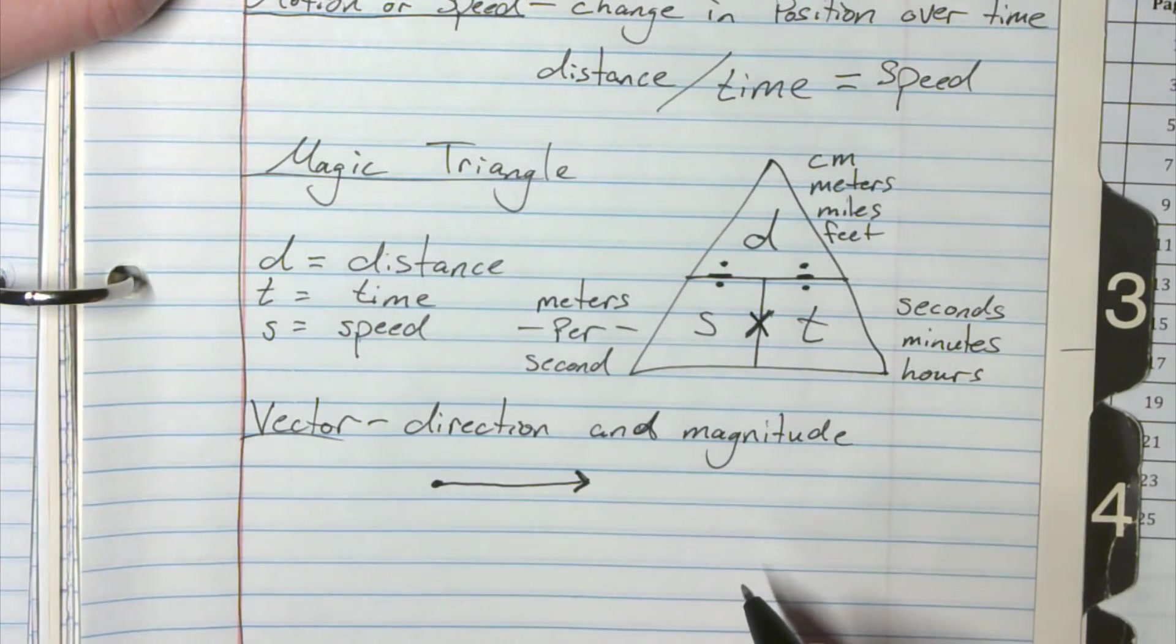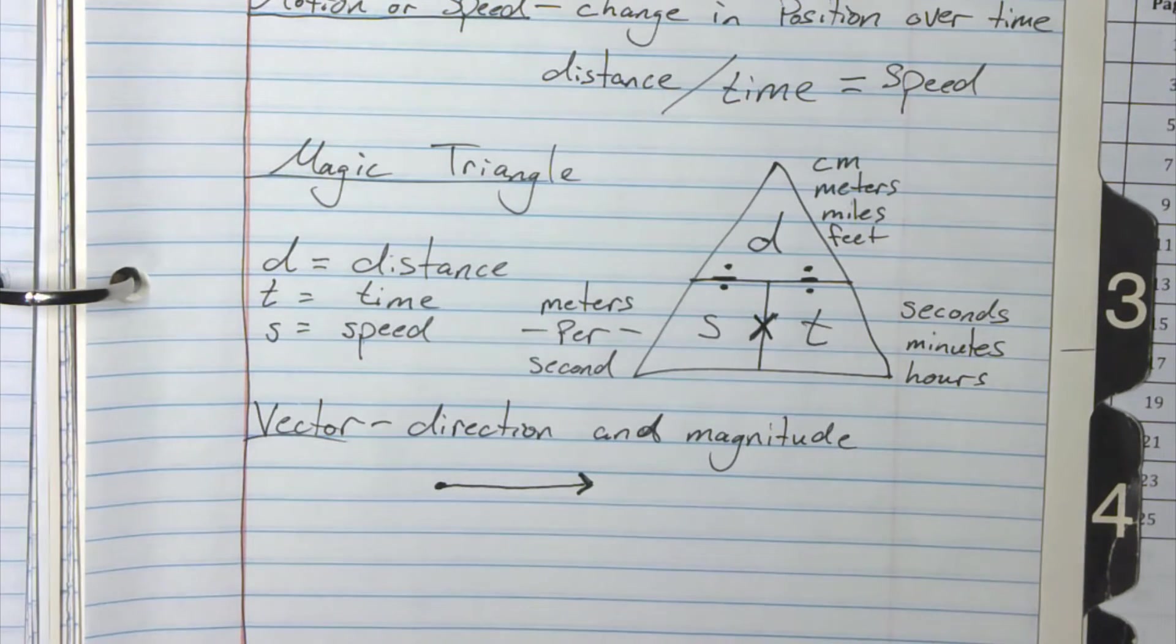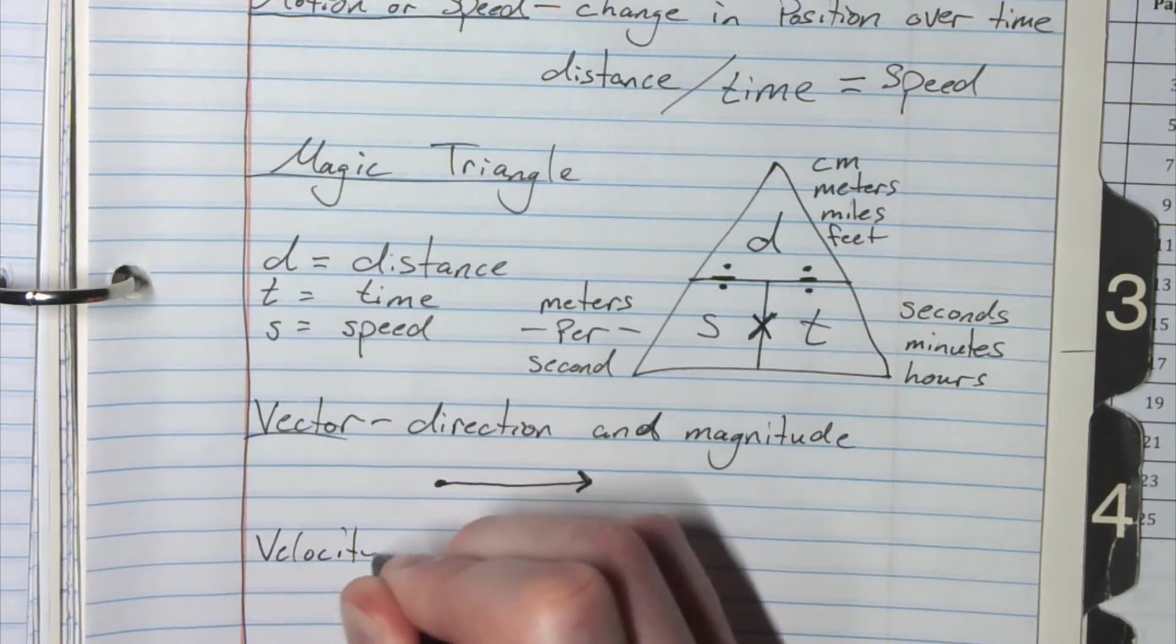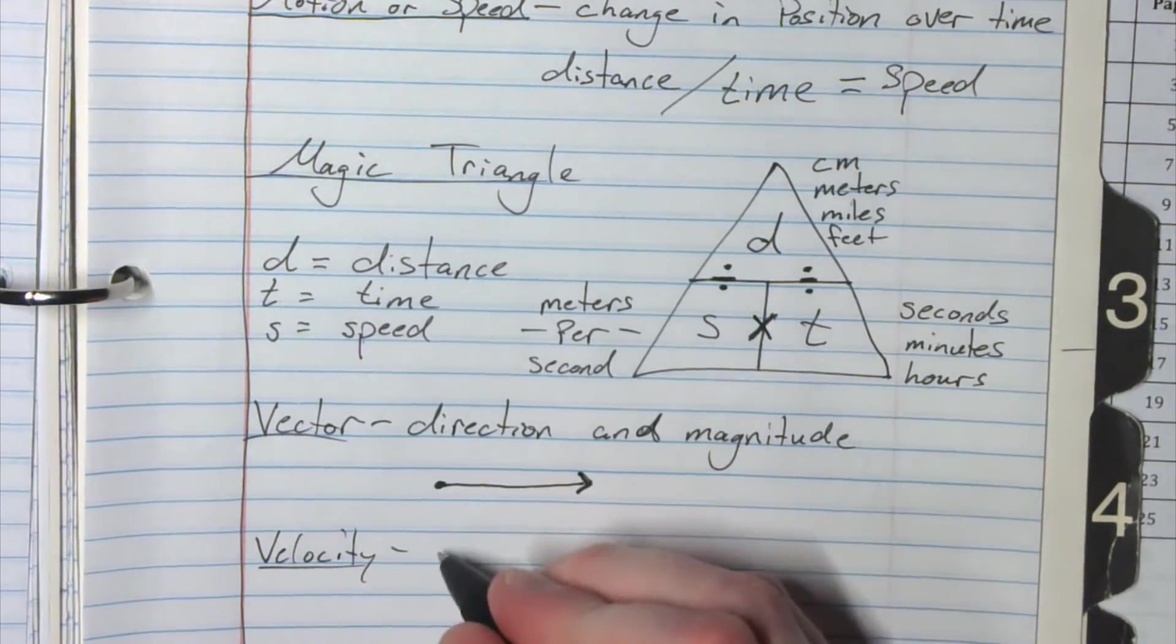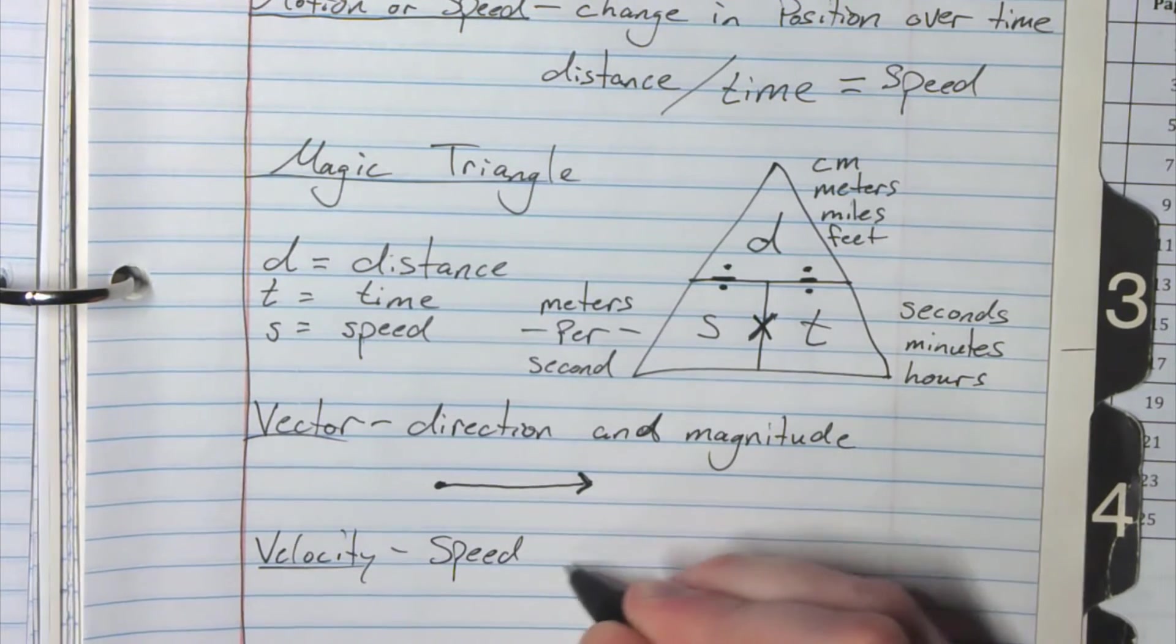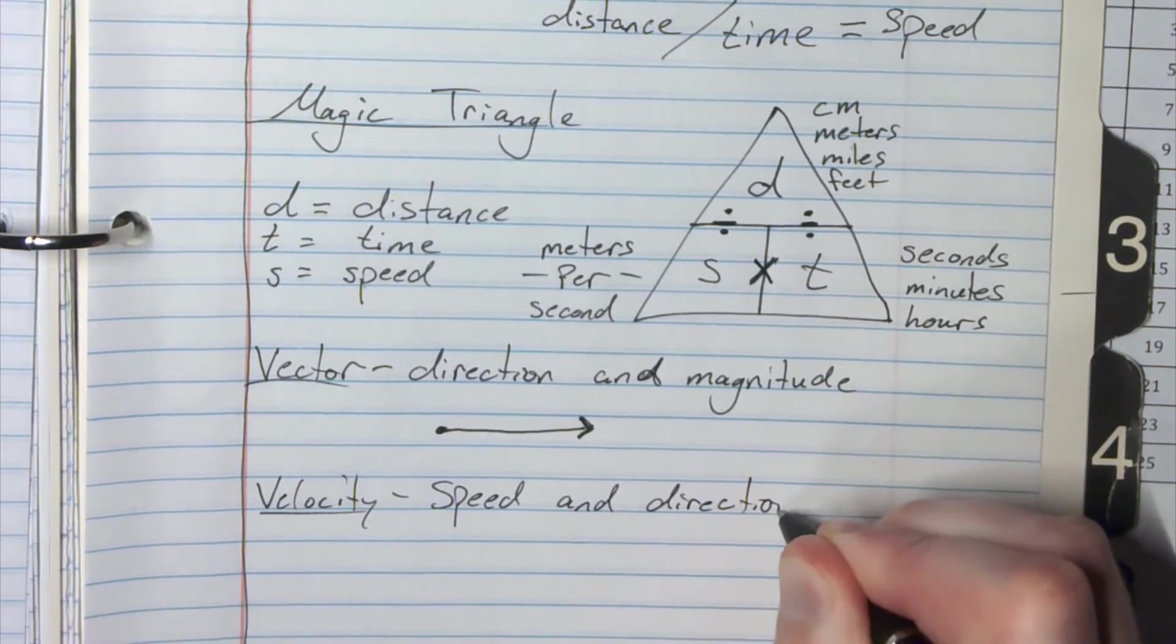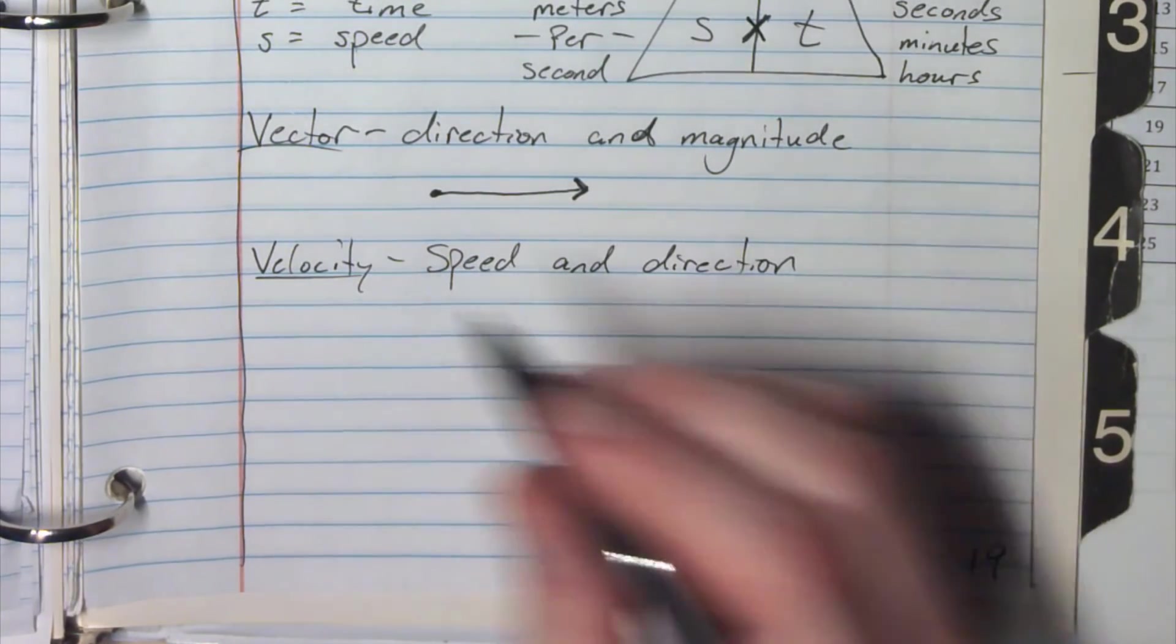Now if I have a vector, if I have a specific vector just for speed, that's called velocity. So velocity is just a vector but it's talking about speed. So speed and direction. Cool, pretty straightforward.